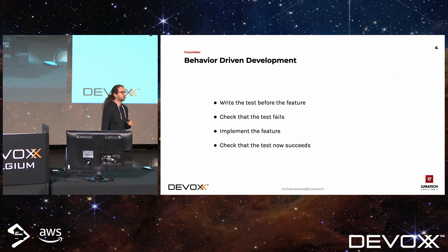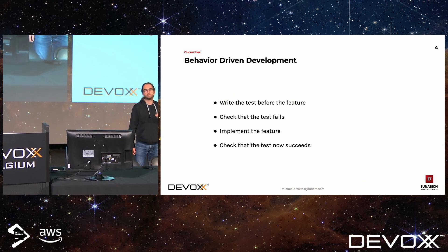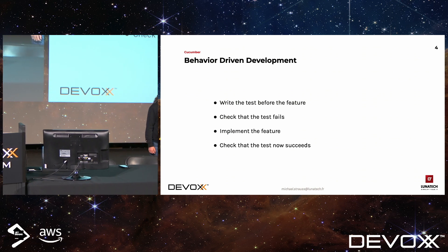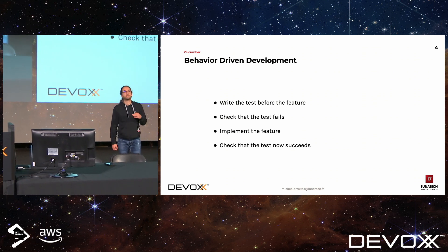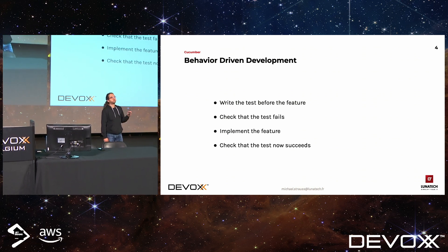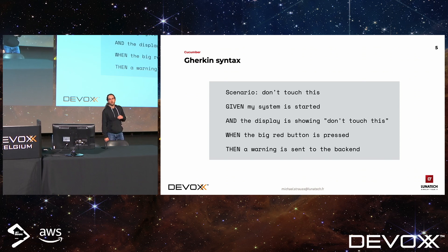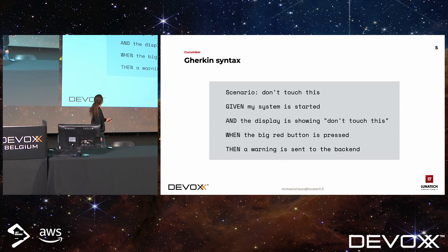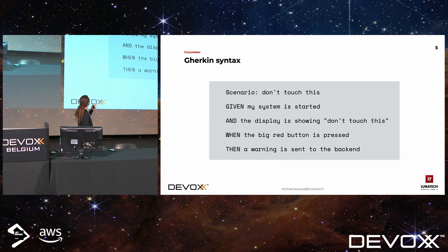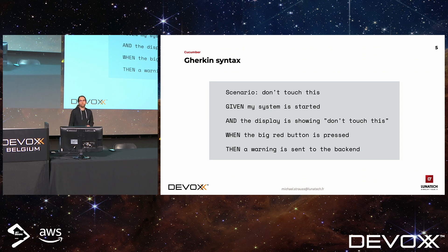To give a very quick summary of BDD: you first write the test before the feature, then you check that the test is failing because the feature is not there, then you implement the feature and check that the test succeeds. To write scenarios, Cucumber uses the Gherkin syntax, so it looks like natural language. In a scenario, each line is a step and there are a few keywords: 'given' is a setup step, 'when' is an action step, and 'then' is a check step.